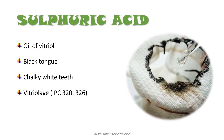Sulfuric acid is also known as oil of vitriol. Pure sulfuric acid is a heavy, odorless, colorless, non-fuming, hygroscopic acid. It causes black tongue and chalky white teeth — remember 'black and white.' Vitriolage is the throwing of sulfuric acid on another person; that is considered a grievous injury under IPC Section 320. If the throwing of sulfuric acid causes disfigurement, it is punishable under IPC Section 326.